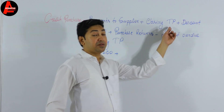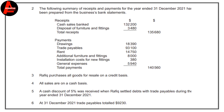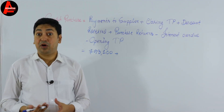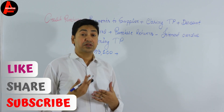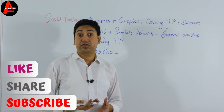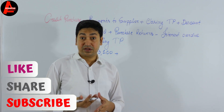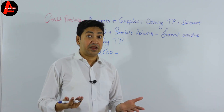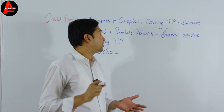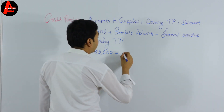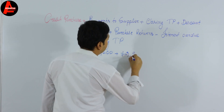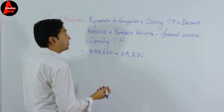Next, we add closing trade payables. From adjustment number six: at 31 December 2021, trade payables total $9,230. This is the closing trade payable because it is the amount at the end of the financial period. The business started 1st January 2021 and ended 31st December 2021, so this is the closing balance.